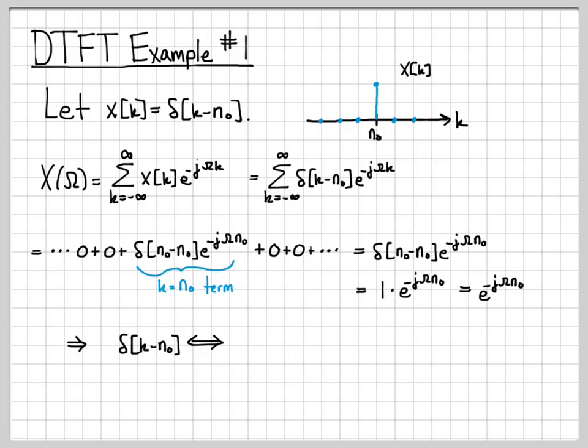So what we have shown is we have shown that the discrete time signal delta of k minus n naught has a discrete time Fourier transform of e to the minus j omega n naught. So what we've shown really is that these two signals are DTFT pairs. The DTFT of the impulse is this complex exponential, and the inverse discrete time Fourier transform of this frequency domain signal is this time domain signal.